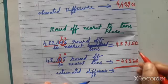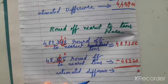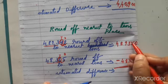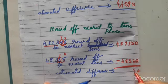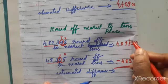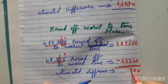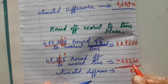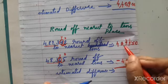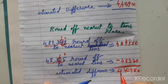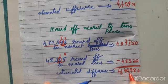Estimated difference in tens place: zero minus zero, zero minus zero. Five minus seven — we can't subtract, so we borrow. Eight minus eight is zero. Eight minus four means four. And this four as it is. The answer is 4,40,908.